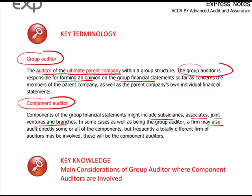A group auditor may also be a component auditor, but quite often in exam questions in particular, and in real life, you may come across a totally different firm of auditors who look after the component. That creates an interesting dynamic. When you're the group auditor, can you place reliance on another big four firm doing a small subsidiary in a far-off land? The answer is you can place reliance, but you need to test how good they've been — have they audited to the same standards that you would? Because the key thing is the group auditor is responsible for forming an opinion. Nobody else. You can't mention the fact that you haven't audited one of the subsidiaries in a far-off country that's material to the group. You can't mention that, you can't talk about the other auditor. It's your opinion, your work, your audit evidence.